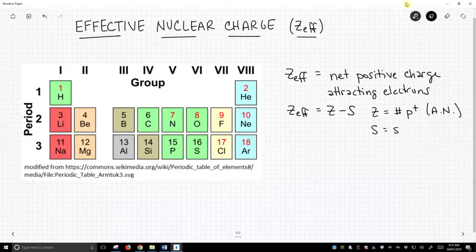S is equal to what we call the shielding electrons. Shielding electrons are simply the non-valence electrons.